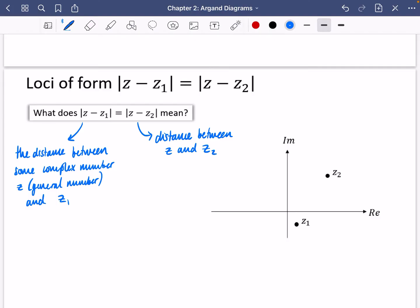So what we're saying here is we want the distance between these two things to be equal to each other. What this equation means is that the complex number z must be equal distance from both z1 and z2.